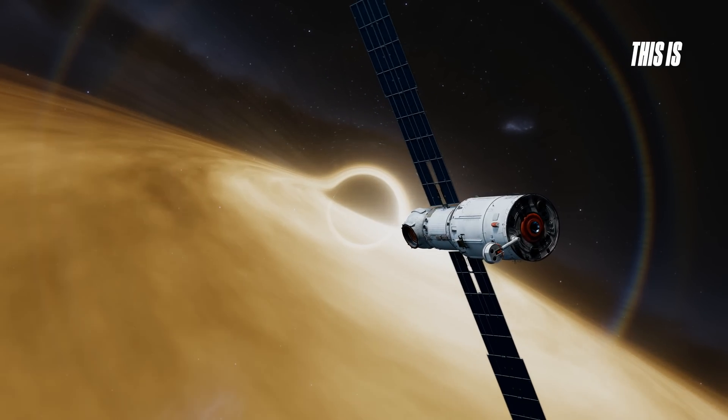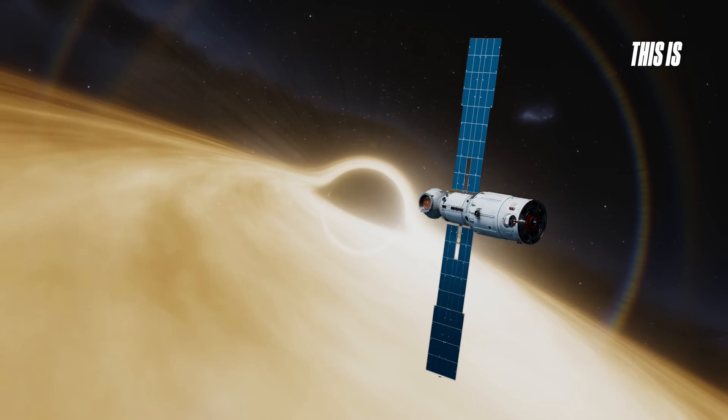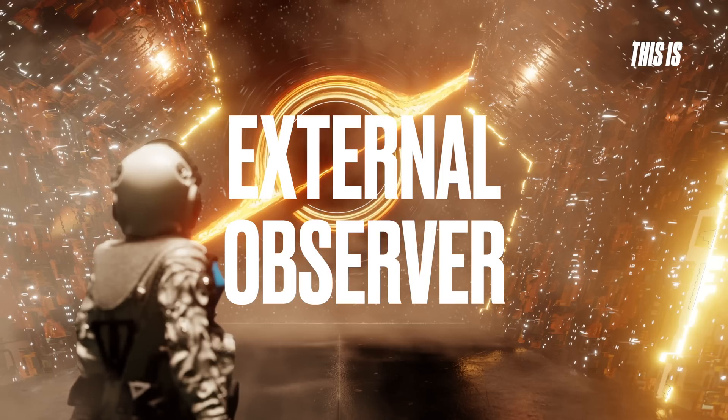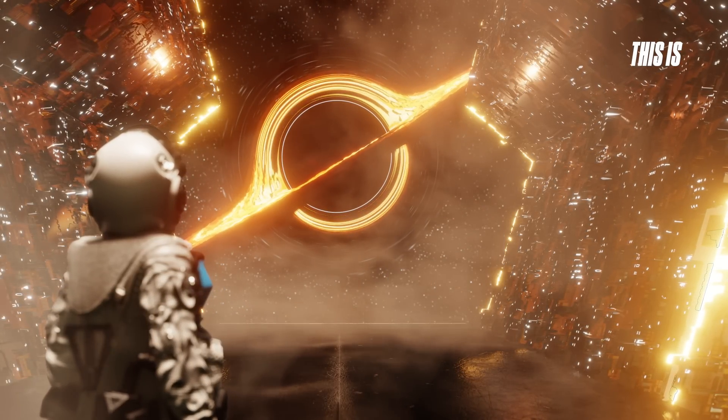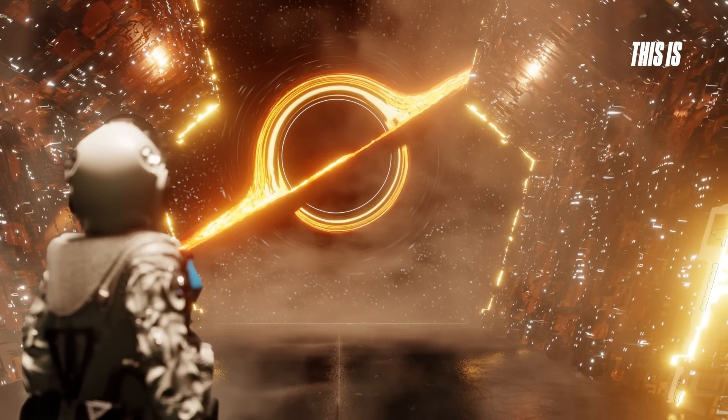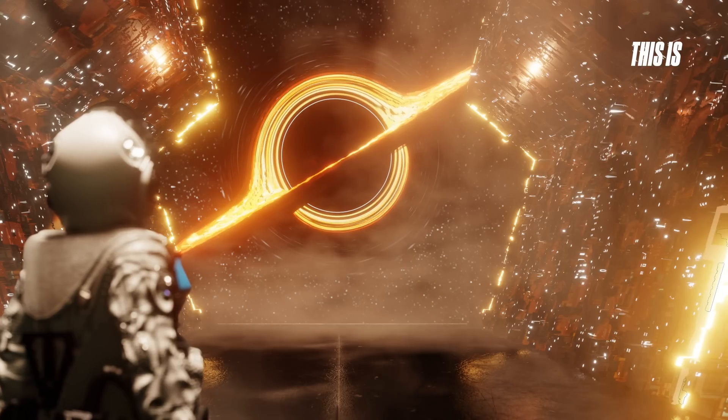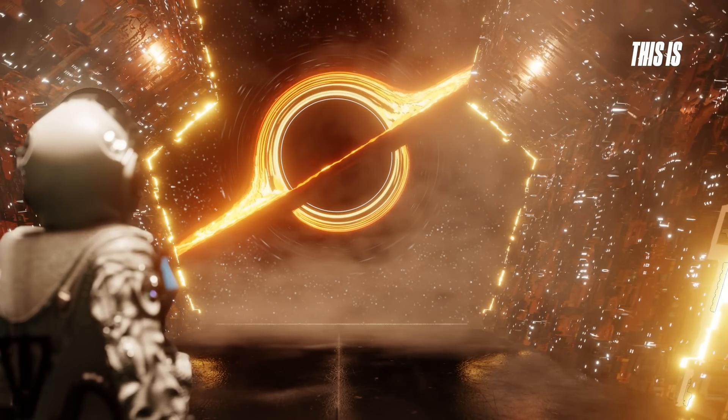So where does it go? There are two perspectives on reality that attempt to answer this question. You, observing from a safe distance, have infinite time. The object dims until eventually, no more light is emitted. However, technically speaking, it remains frozen just above the event horizon.